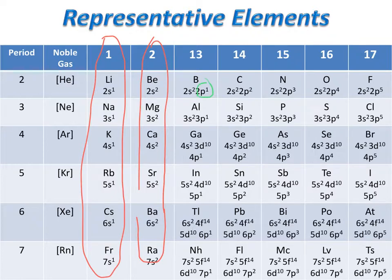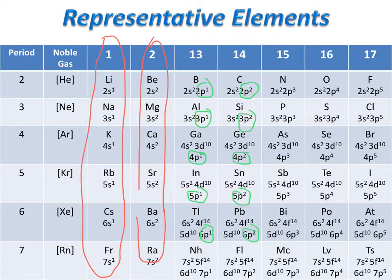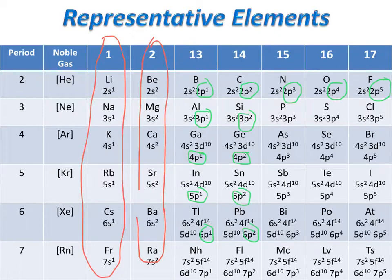Group 13 ends in P1, group 14 ends in P2, group 15 P3, group 16 P4, and group 17 P5. You might also note that we do not see any exceptions to these rules. This gives us some consistency in the periodic properties observed among these elements, which we will discuss in a later chapter.